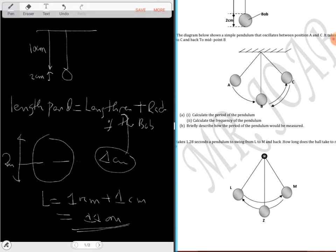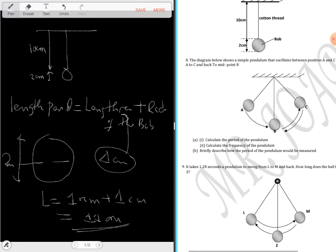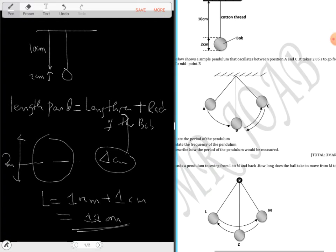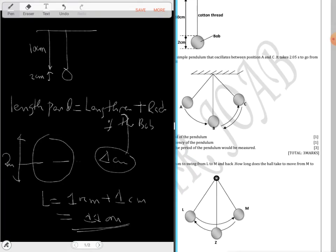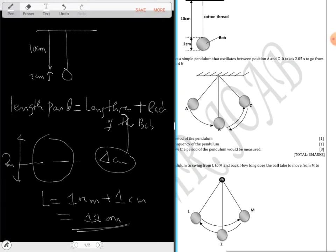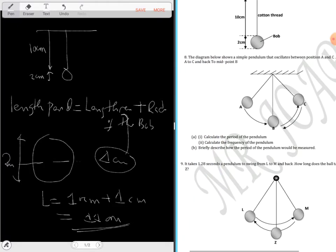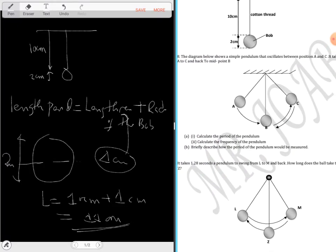I'll end here saying the diagram below shows a simple pendulum that oscillates between A and C. It takes 2.05 seconds to go from A to C and back to point A.